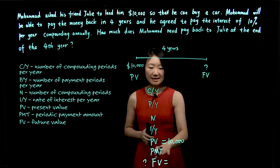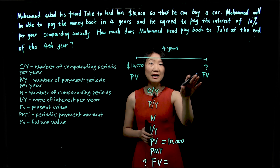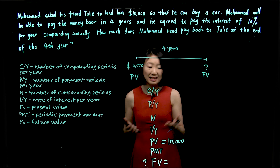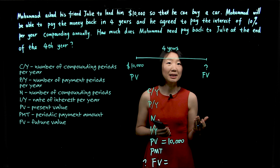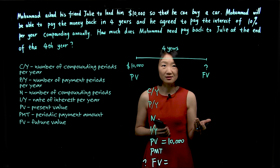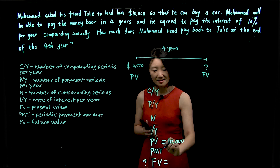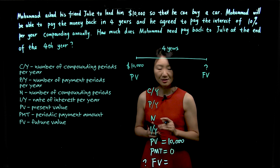PMT stands for periodic payments. In this case, we don't have periodic payments. Periodic payments are like monthly payments for mortgages or credit debts. In this case, periodic payments is zero.